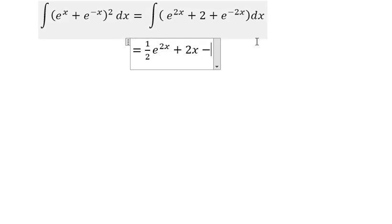The integral continues with negative 1 over 2 multiplied by e to the power of negative 2x, and we have the constant C.